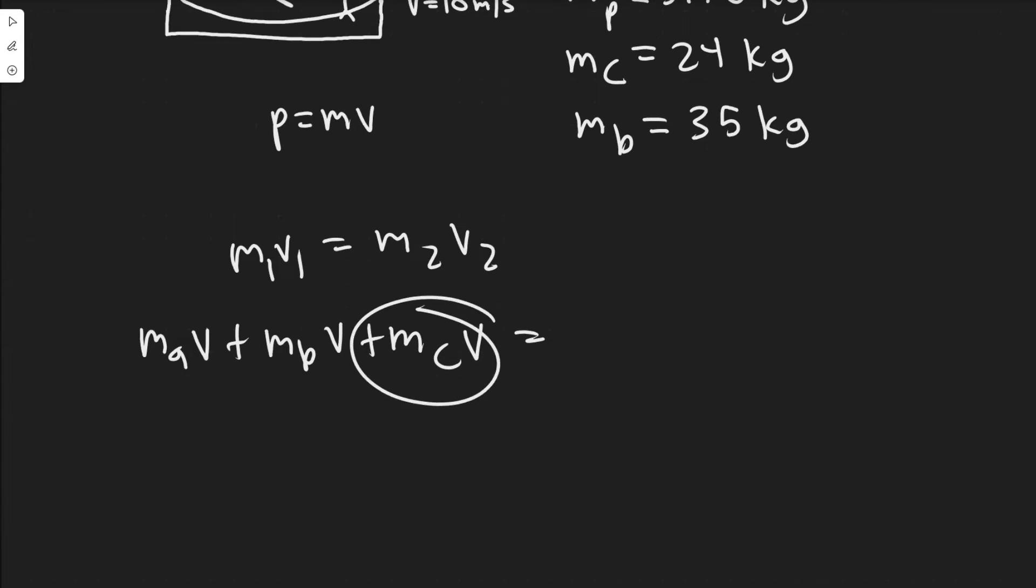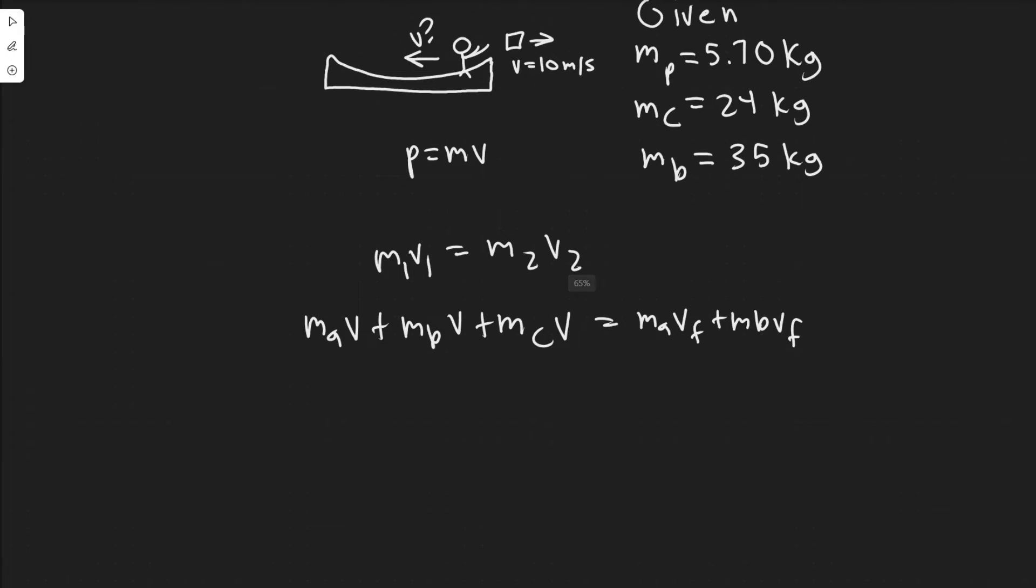What you should know is that the velocity of the boy and the boat aren't moving in the beginning. So the only thing that has momentum on this side is the package. We know that the momentum of the package has to be equal to the momentum of the boy and the boat after it's thrown.